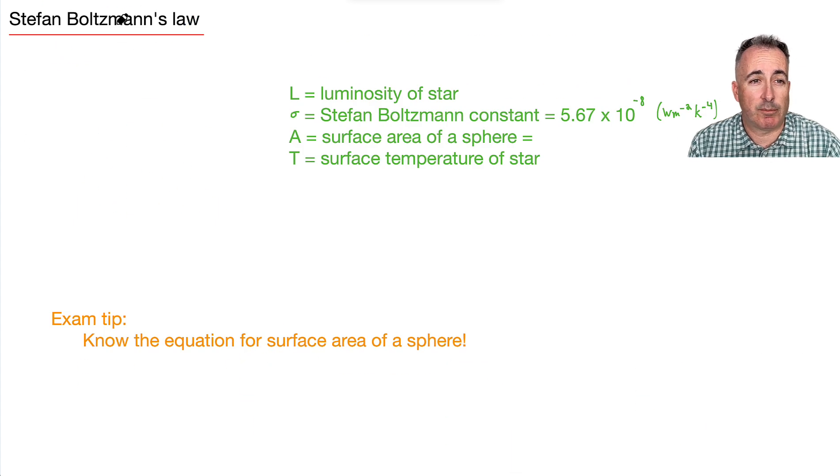Now we have Stefan-Boltzmann's law, which tells us something about the luminosity of a blackbody. Like, for example, it goes L equals sigma A T to the fourth. Again, this is not something you have to memorize. It's on your data booklet.